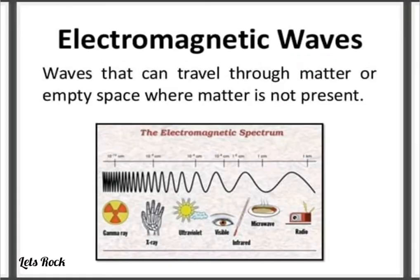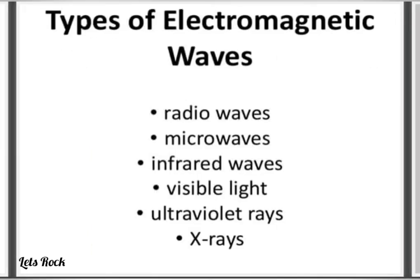Electromagnetic waves can travel through matter or empty space where matter is not present. The electromagnetic spectrum includes radio waves, microwaves, infrared waves, visible light, ultraviolet rays, and x-rays.